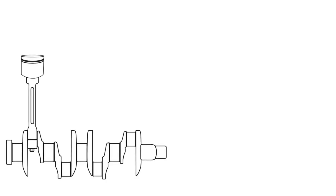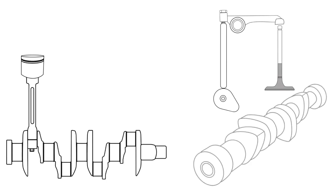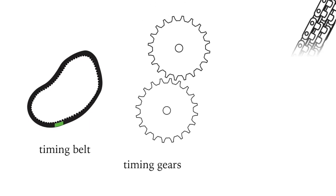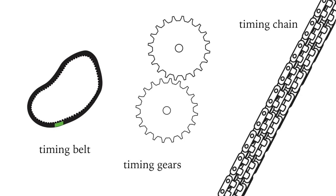The pistons on the crankshaft and the intake and exhaust valves connected to the camshaft must work together or be synchronized. This is done by one of three methods depending on the engine design: a timing belt, timing gears, or a timing chain.